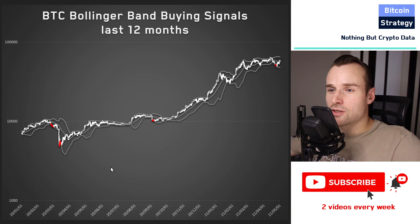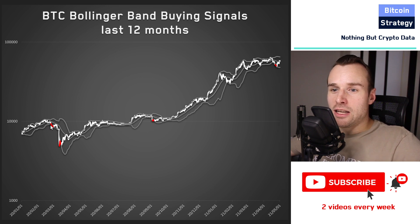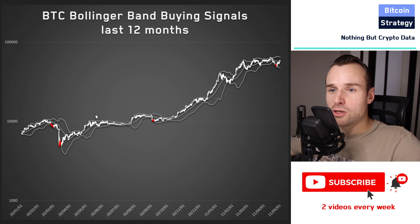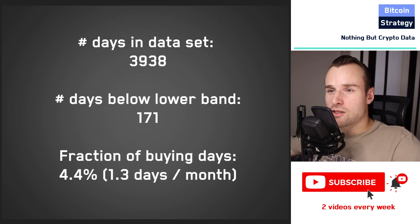To backtest this strategy, we look at whether prices are on average lower when they are below the lower Bollinger Band compared to any random price in the data set — so can we get a cheaper buying price by waiting for those Bollinger Band buying signals. Here's a visual: we only buy whenever the price is below the lower Bollinger Band, shown as red buying signals. The question is: if we average those prices and compare to the average price over the whole time frame, do we actually get a discount?